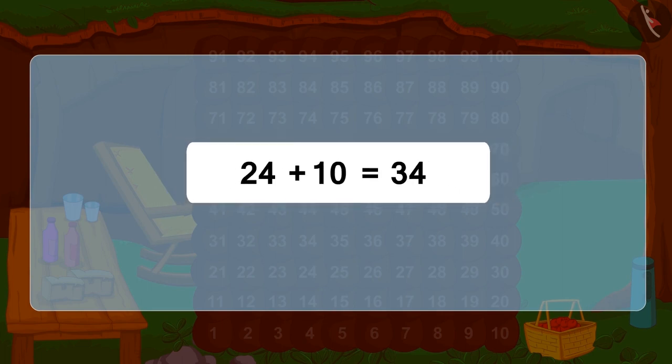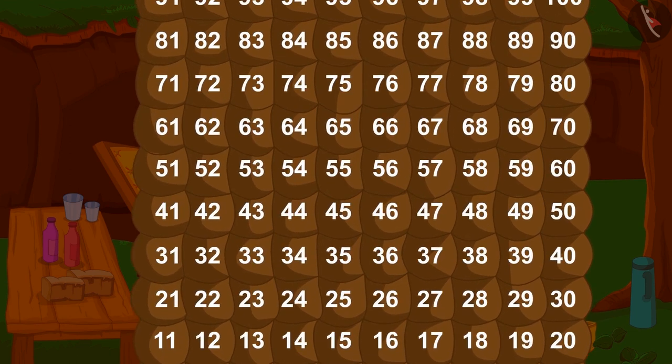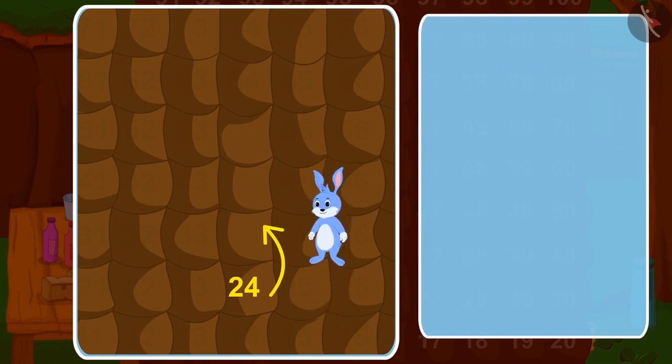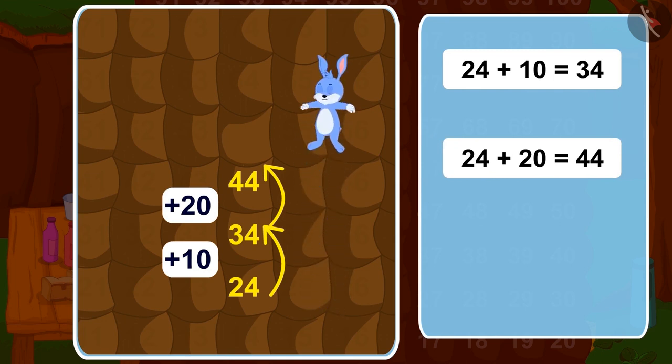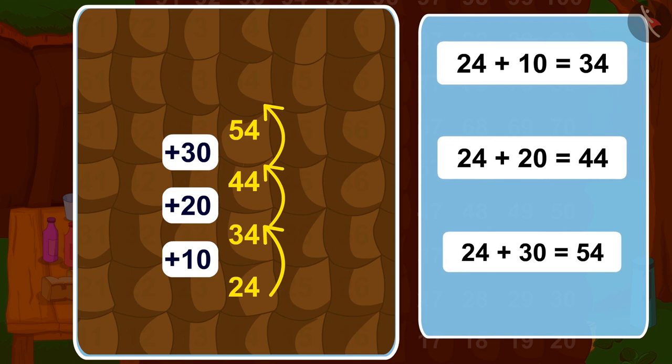Do you know an exciting thing about Bunny's house? If we jump up from any room we can move 10 steps forward, that is add 10. In the same way, if we take two jumps above, how many steps will we add? 20. Three jumps up? 30. In this way, one can easily add 10 with every jump up from any room number.